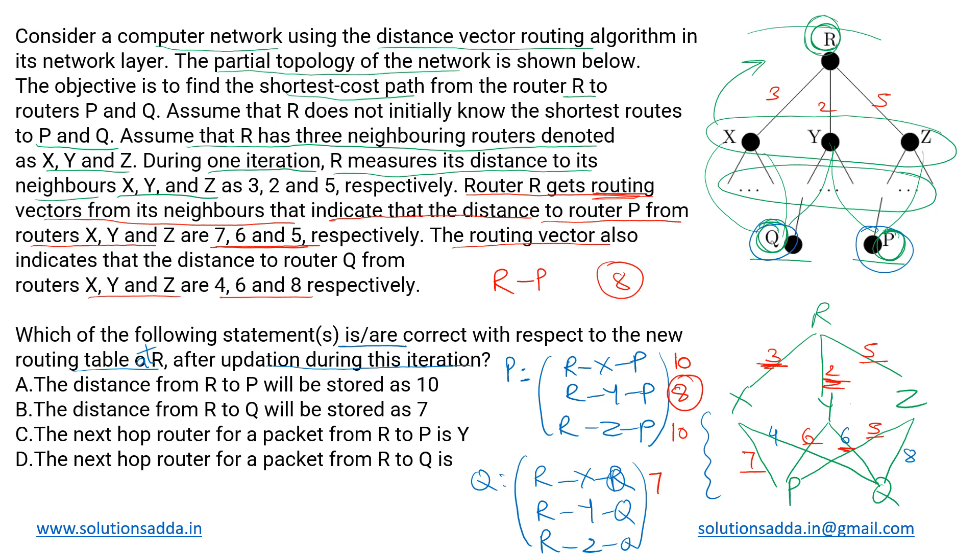Then R-Y-Q: R-Y is 2 and Y-Q is 6, so 2 plus 6 is 8. Then R-Z-Q: R to Z is 5 and Z to Q is 8, so 5 and 8 is 13. So minimum of all of them is 7. The distance R to Q will be resolved as 7.